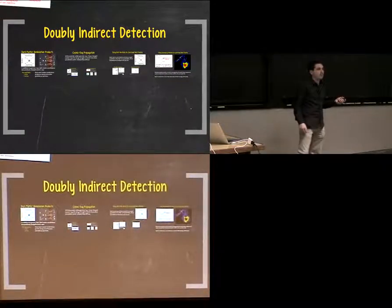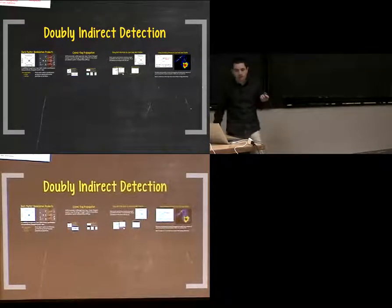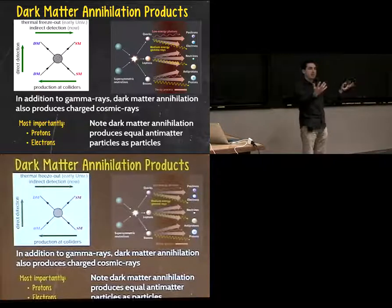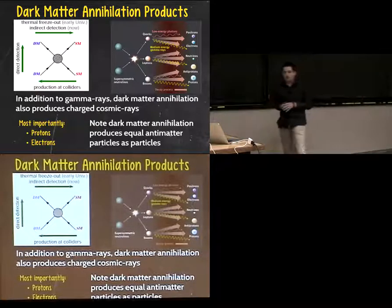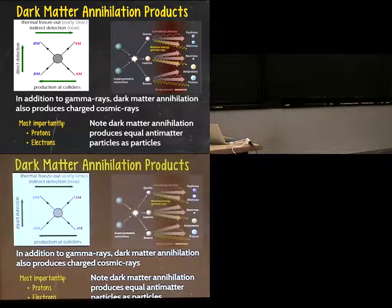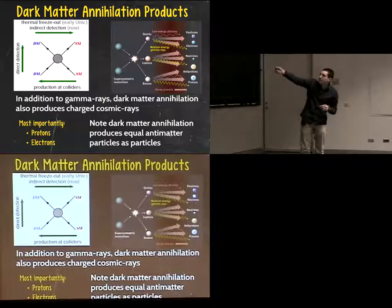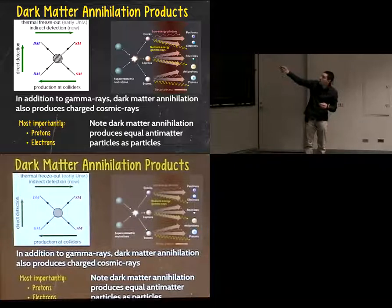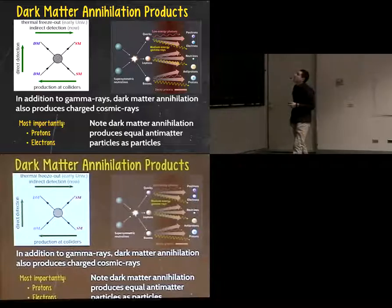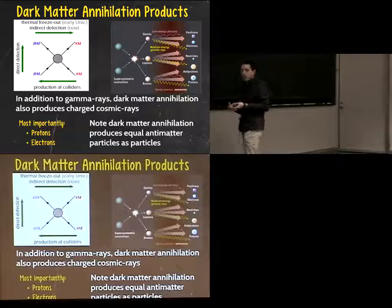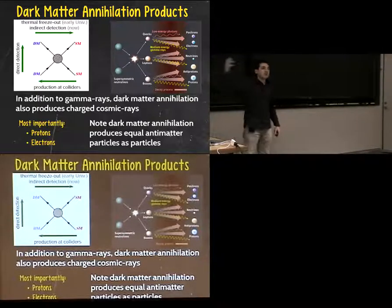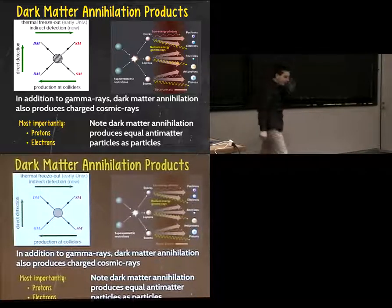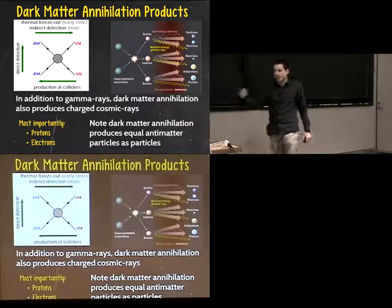In doubly indirect detection, we lose that spatial information. What we're going to talk about is dark matter annihilation producing not the gamma rays, but the other particles—electrons, positrons, protons, and antiprotons. Note that dark matter produces equal numbers of particles and antiparticles: for every proton that gets produced, there is an equal antiproton. We're going to focus for the rest of this on protons and electrons and their antiparticles.